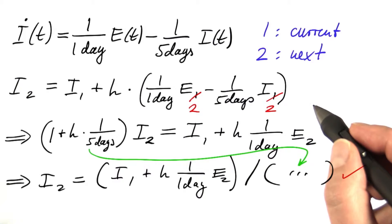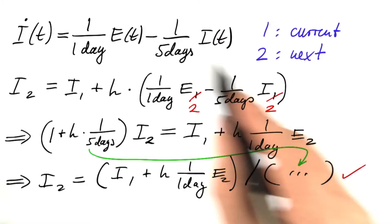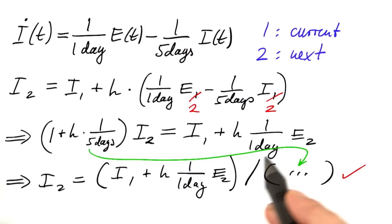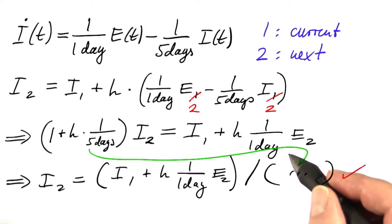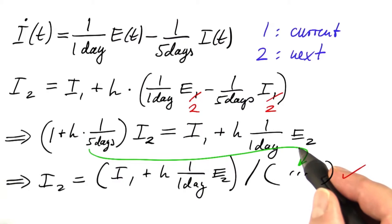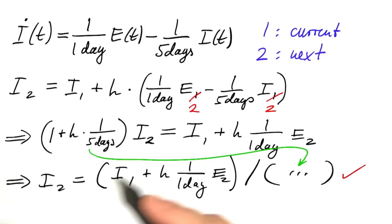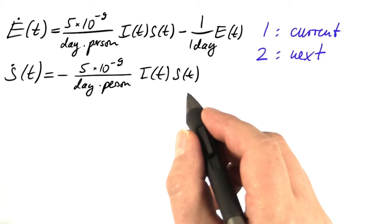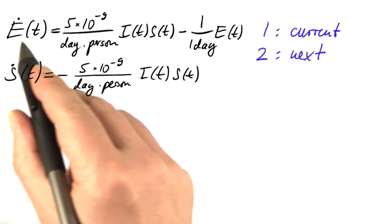The main message here is that implicit methods come at a price. Solving these equations can get very ugly. If you are convinced at this moment, you may want to skip the rest of this segment. Otherwise, stay with me to see how we can compute e2, which, by the way, is needed to be able to compute i2.